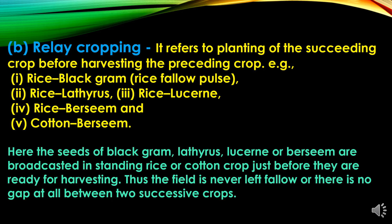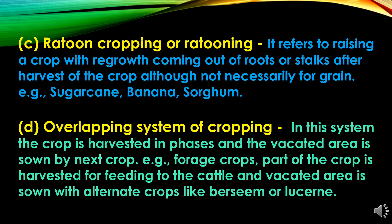The second type of multiple cropping is relay cropping. It refers to planting of the succeeding crop before harvesting the preceding crop, like rice-black gram-rice-fallow pulse, rice-lathyrus, rice-lucerne, rice-berseem, and cotton-berseem. The seeds of black gram, lathyrus, lucerne, or berseem are broadcasted in a standing rice or cotton crop just before they are ready for harvesting. Thus the field is never left fallow — there is no gap at all between two successive crops.